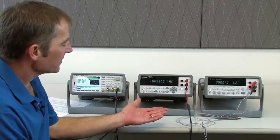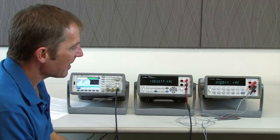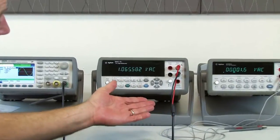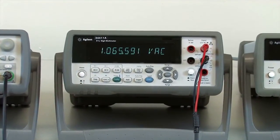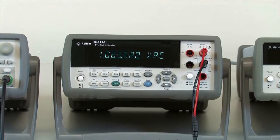A couple considerations with our multimeter when making AC measurements. The first one is amplitude. If you put in a large AC signal, a couple hundred volts, you'll see self-heating of the multimeter and additional errors. That's true with all multimeters.